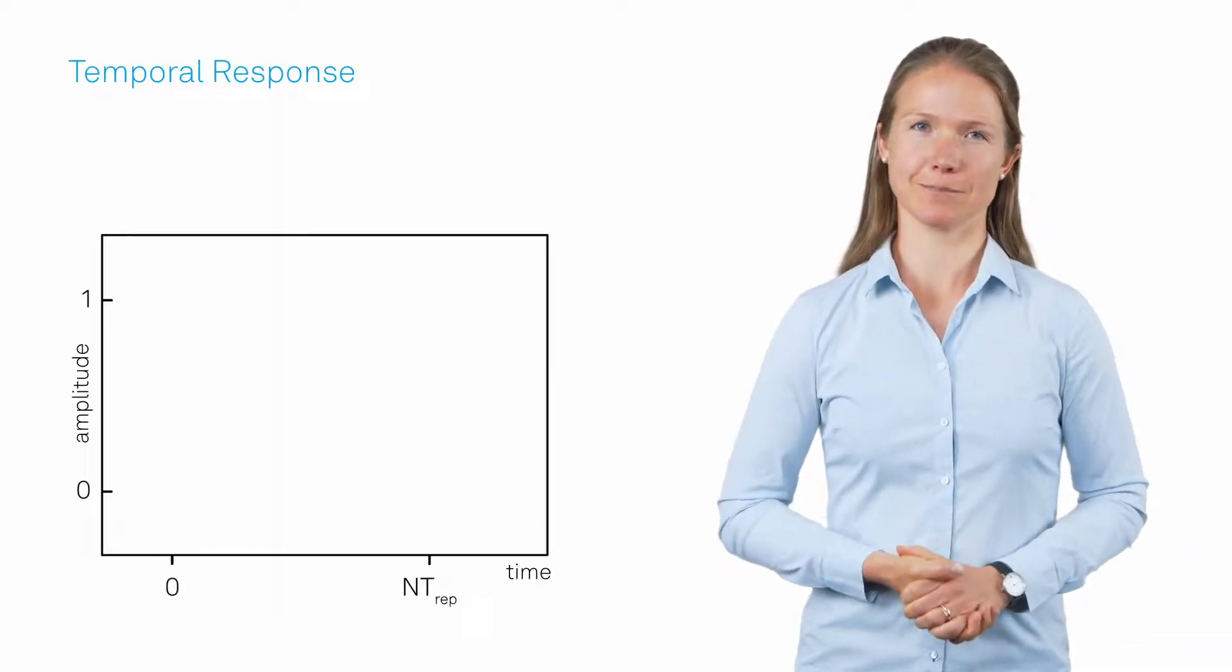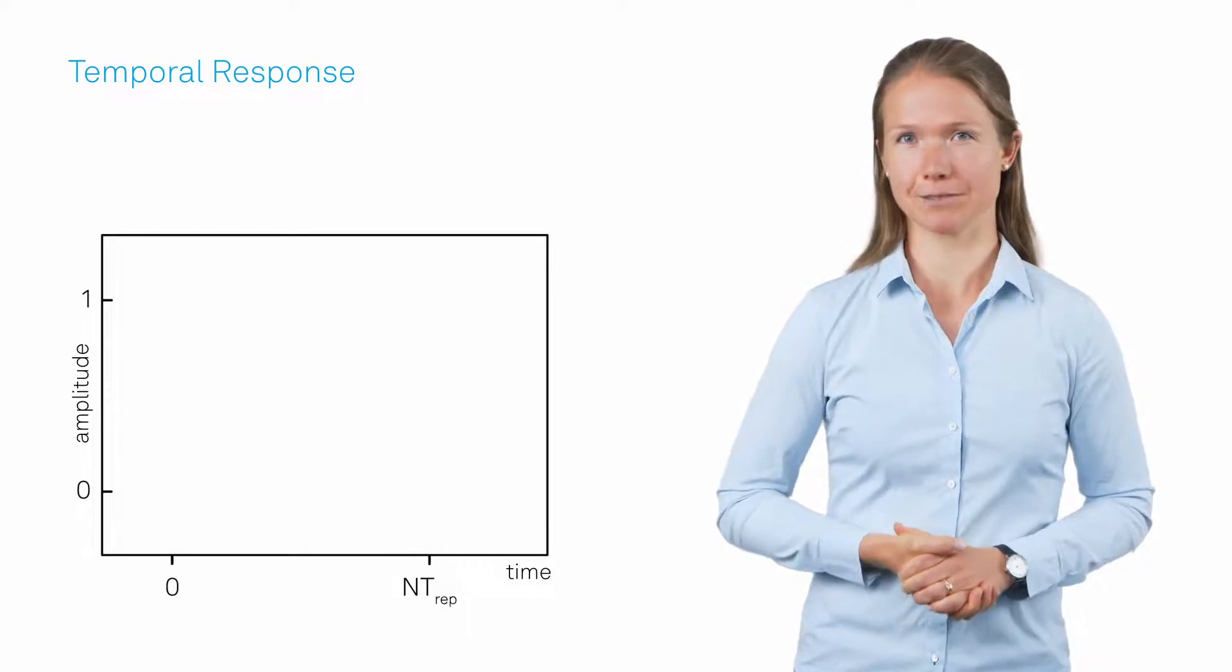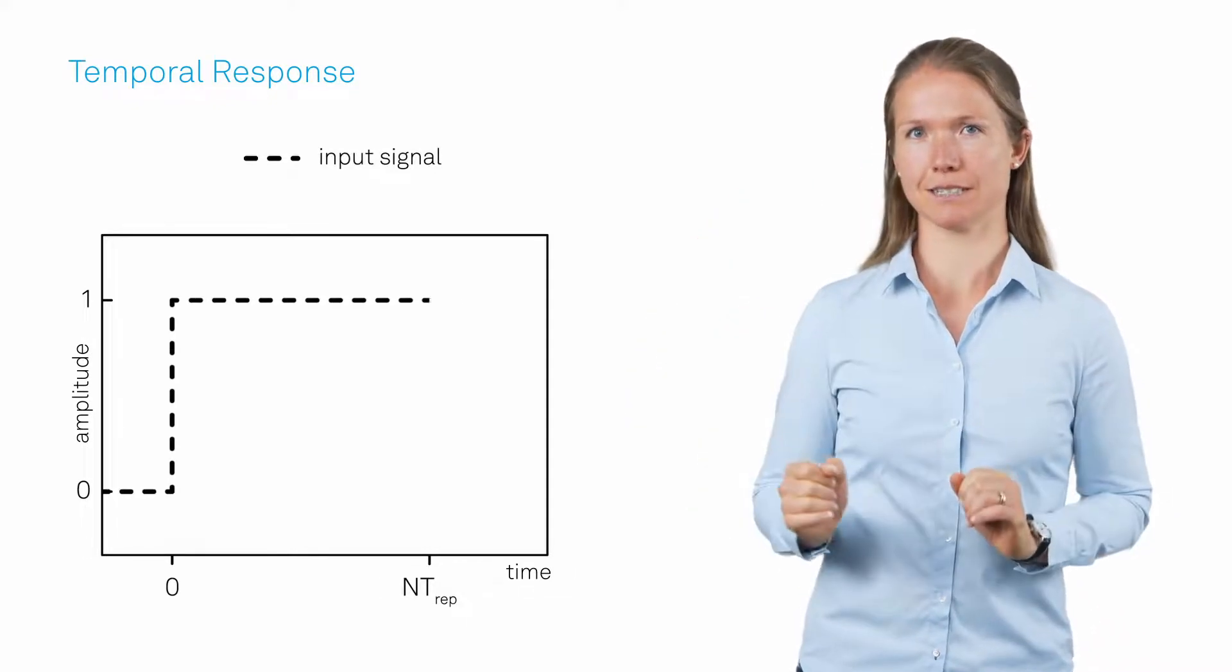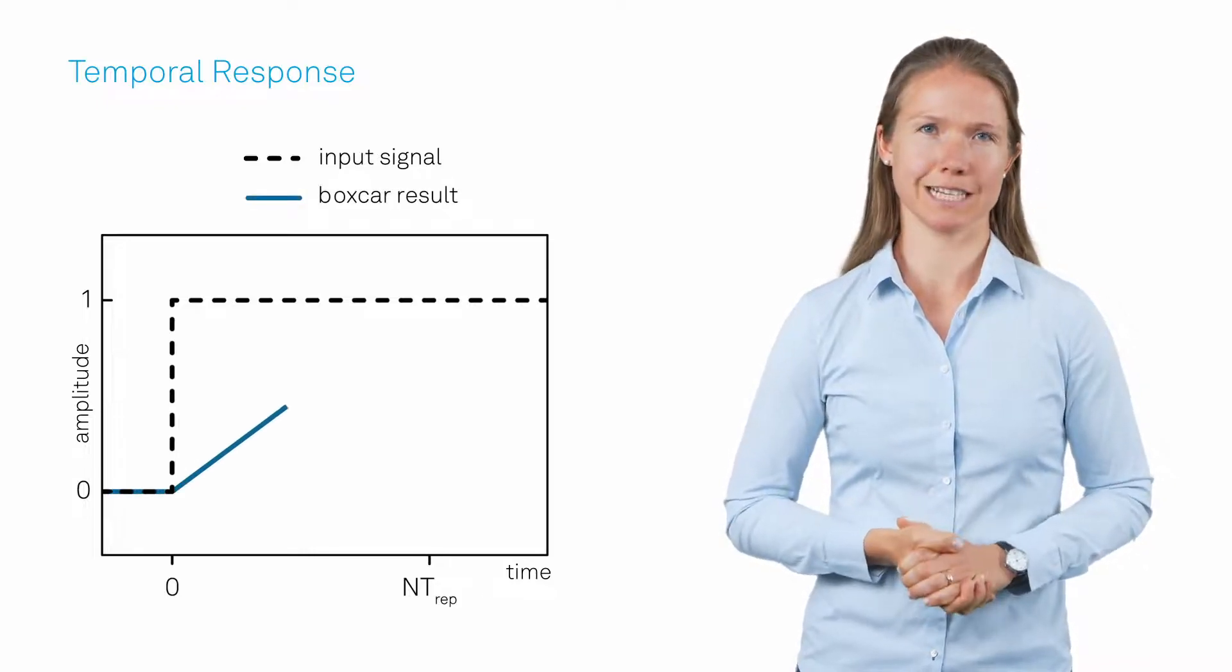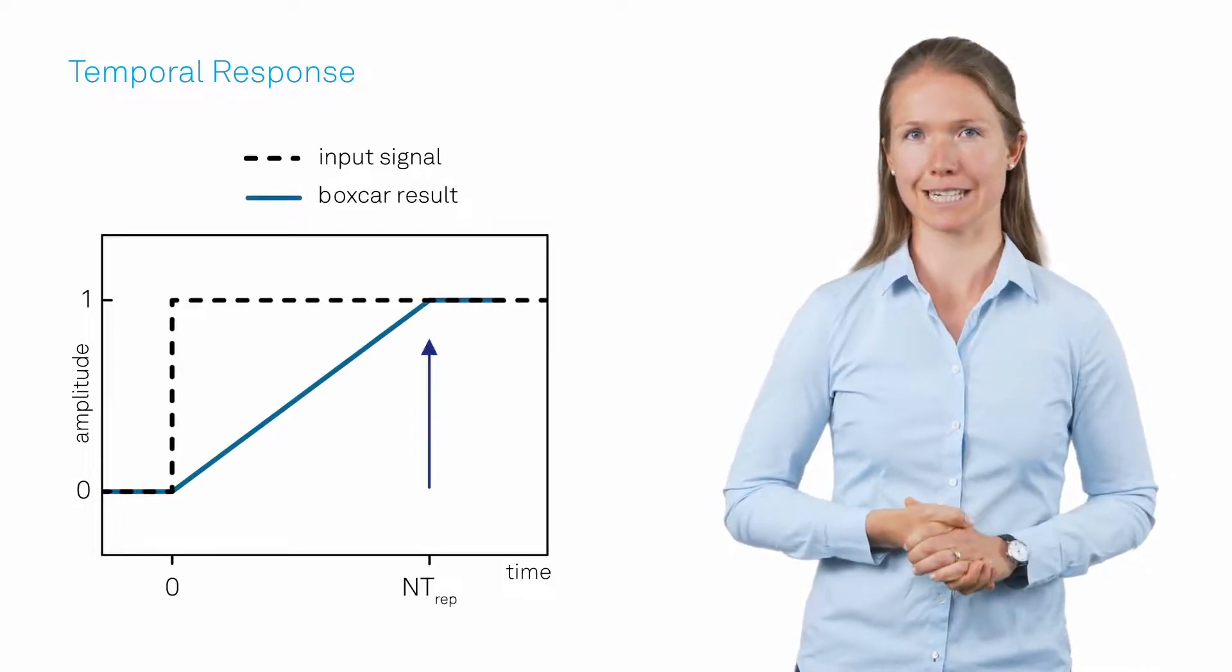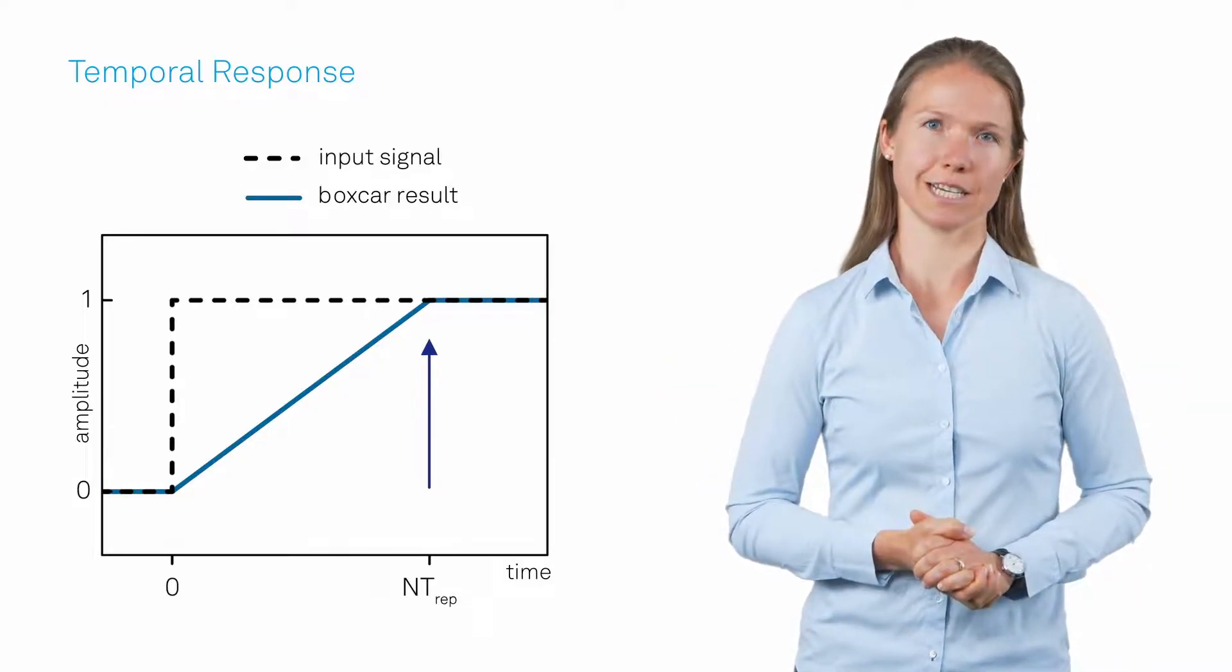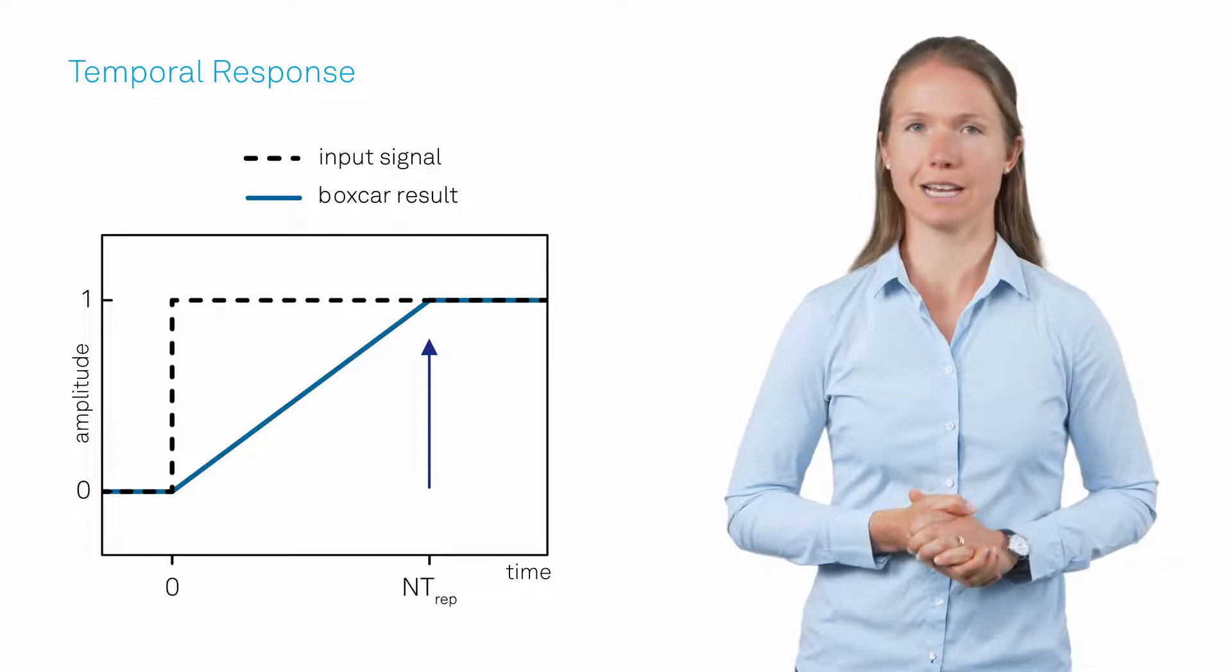However, the choice of the number of averaging periods directly affects the temporal response. After a step in the signal, the resulting value approaches the final value linearly and settles after N periods. Hence, the best choice is a trade-off between signal-to-noise ratio and measurement speed.